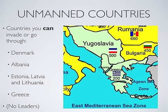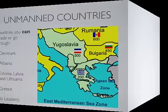Unmanned Countries: Albania, Denmark, Estonia, Latvia, Lithuania, and Greece are countries involved in the simulation, but they are not manned. You may invade them or take them over. They may have some strategic importance, but they have no natural resource value.